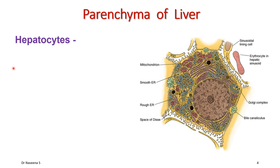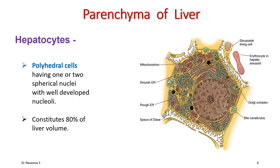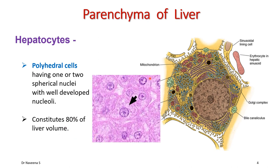The parenchyma of liver is mainly composed of hepatocytes or liver cells, which are polyhedral cells, hexagonal in shape, having one or two spherical nuclei with a prominent nucleolus. They constitute 80% of liver volume. In hematoxylin and eosin stained tissue, the hepatocyte shows a hematoxylin-stained spherical nucleus, eosin-stained cytoplasm, and cell wall.